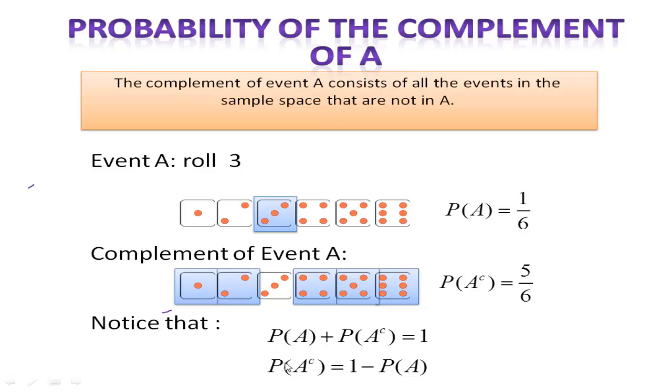And here, if you want to work with the probability of the complement instead of working with the probability of the event, then you would have to calculate the probability of the event and subtract from 1, and you would get the probability of the complement.